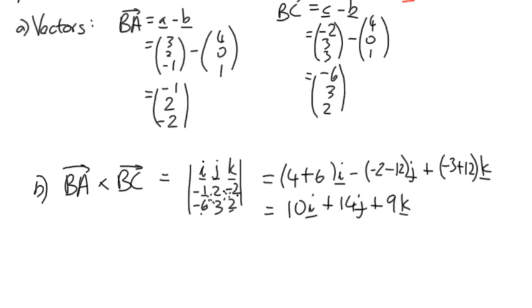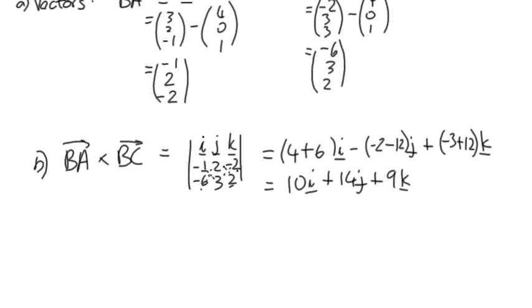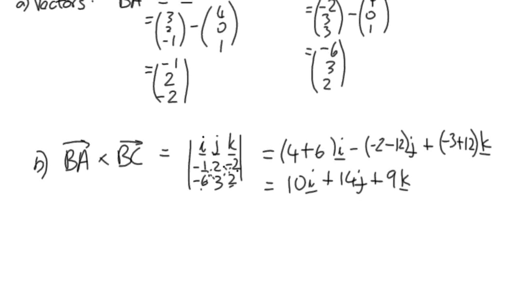So the vector product works out as 10I plus 14J plus 9K, or I could write it out in the component form as (10, 14, 9).